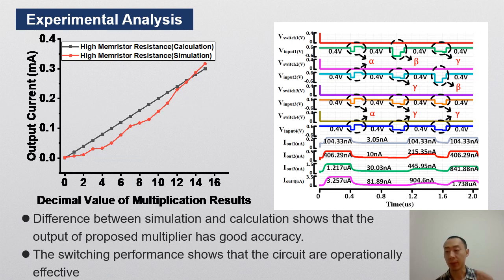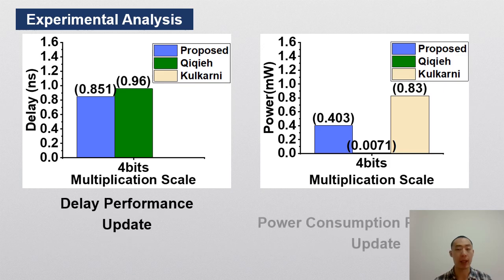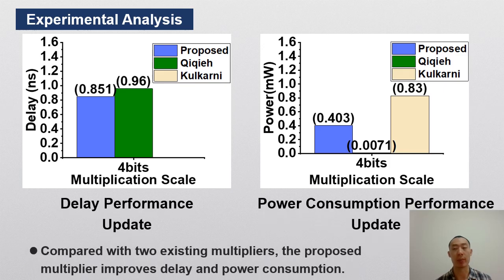Alpha, beta, gamma function can be shown by the change of the respective current. When compared with other two multipliers,